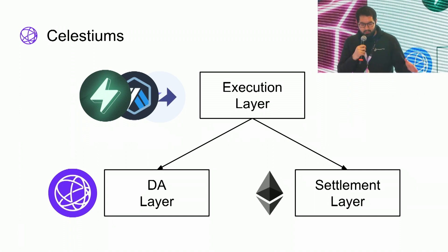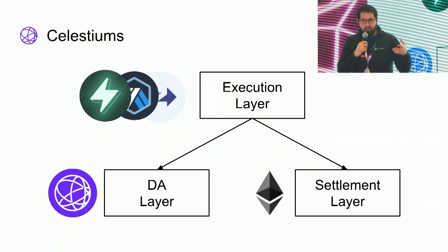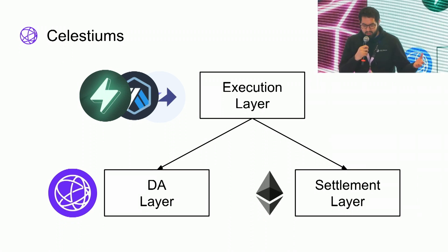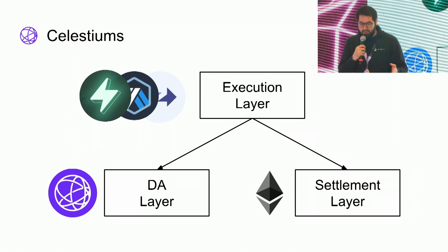No other blockchain does this or even comes close. Other blockchains, especially monolithic blockchains, require you to fully download data in order to verify it's available, which is part of the reason why monolithic blockchains aren't very scalable. With Celestia, data availability sampling allows anyone in the world to verify that data is available without fully downloading it.